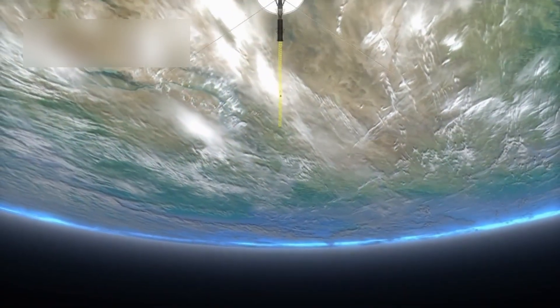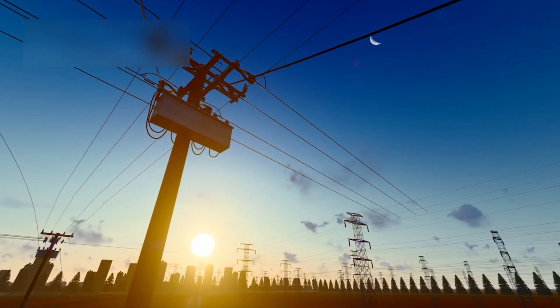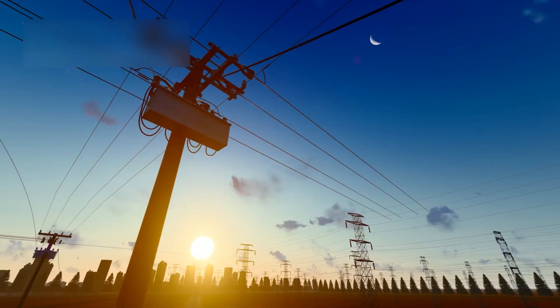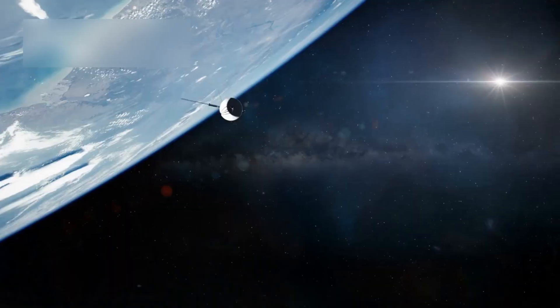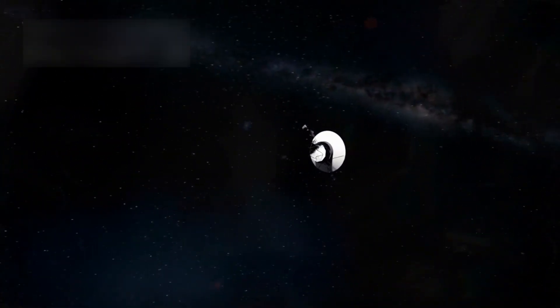The spacecraft continues to face serious challenges. Communication with Earth takes about 19 hours one way, and its power supply is dwindling. To save energy, NASA has had to shut down non-essential systems, leaving only the most critical instruments running.